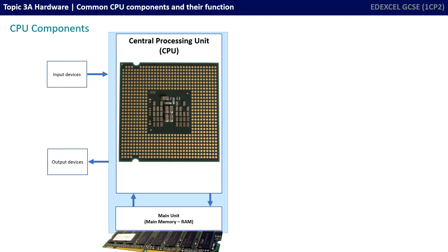Here we see an abstraction of a computer system. The boundaries of the computer system are represented by the blue shaded box. We can see the computer accepts inputs from a keyboard and a mouse, and provides output from a monitor and speakers. The two main internal components we're interested in here are the central processing unit and main memory. Let's take a look inside the CPU and see what it's made up of.